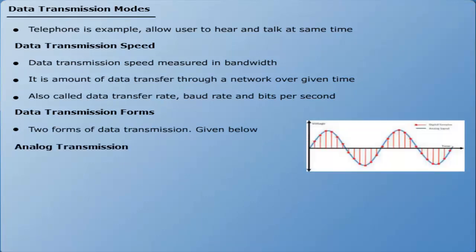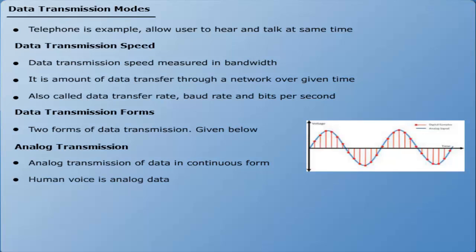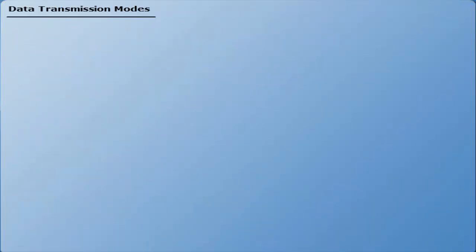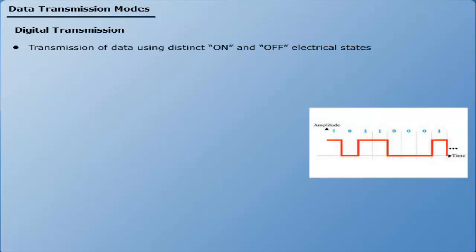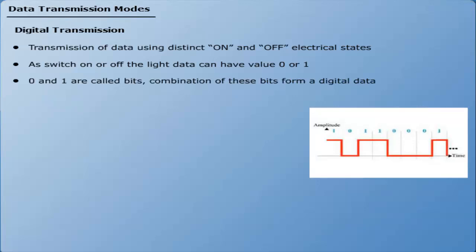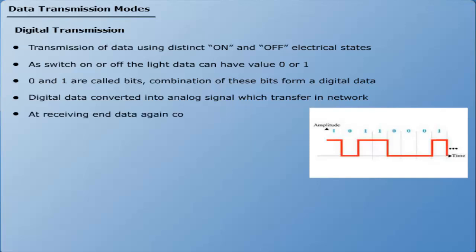Analog transmission is the transmission of data in a continuous wave form. The human voice is an example of analog data — when someone talks, an analog wave is created in the air medium. Analog signals are represented by a continuous range of values. Digital transmission is the transmission of data using distinct ON and OFF electrical states. The data bit can have values of 0 or 1. The combination of these bits forms the digital data. Digital data can be converted into analog signals for transfer between computers, and at the receiving end it is converted back into digital signals.